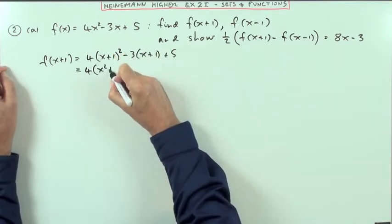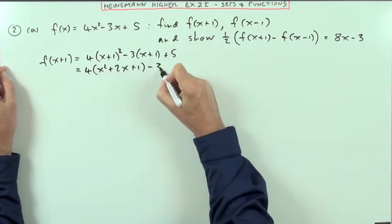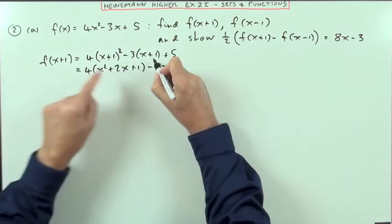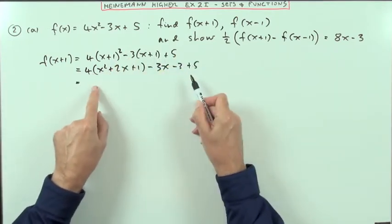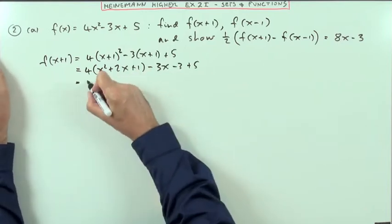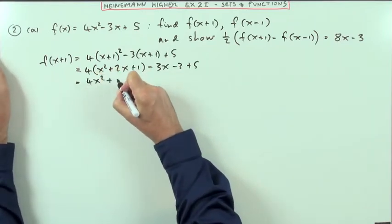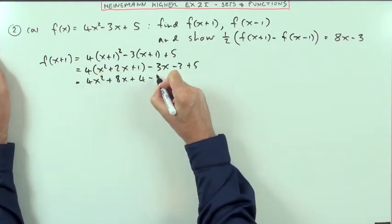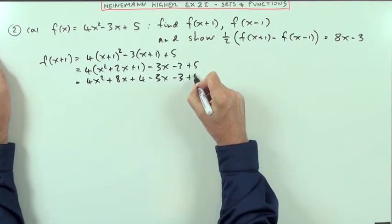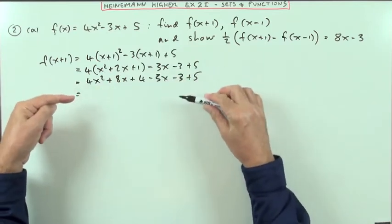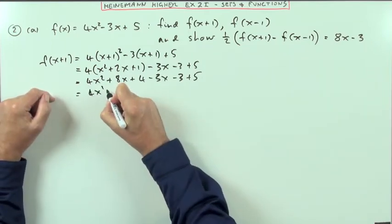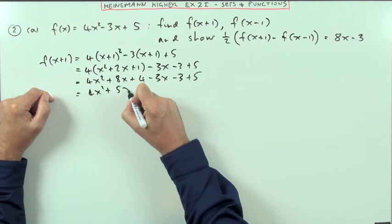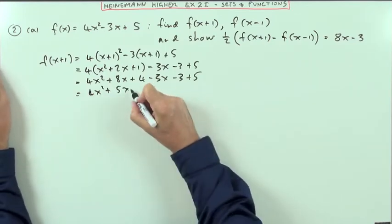So it's going to be square the first, twice the product, square the last. Multiply that out. Minus 3x, minus the 3, plus the 5. I could tidy up from this. Let's multiply it out. 4x² + 8x + 4, minus 3x - 3 + 5. It's just that it's so long and quite often you'd want to skip some steps because it's only little bits of arithmetic. So that's 4x² + 5x, and then it's going to be plus 6.